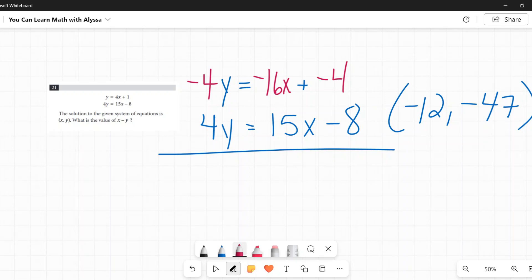When we add all these together, I get negative 4y plus 4y equals 0. Then I get negative 16x plus 15x is negative x. Negative 4 plus negative 8 is negative 12. Then I'm going to add x to both sides, so I can get x on the left and the number on the right. And that gives me, on my left side, just x, and on the right is negative 12.